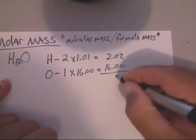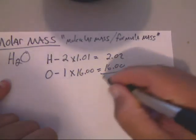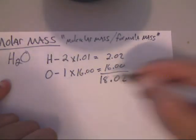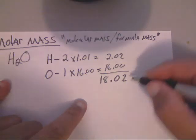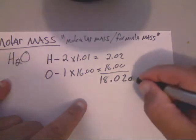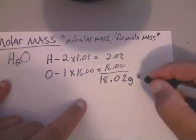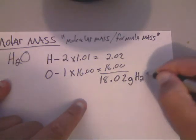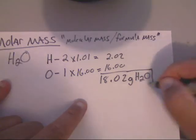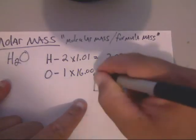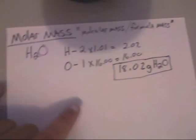You just multiply those together. You get 2.02, and then you get 16.00. You add this up and you get 18.02. Now you're almost done — all you've got to do is put grams per H₂O on it. And that's how you calculate molar mass.